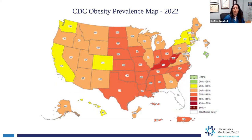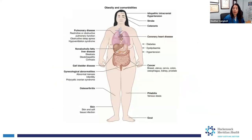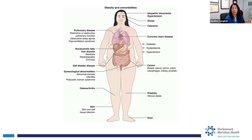So why do we worry about obesity? We worry about obesity because of the comorbidities that it causes, and it affects essentially all parts of the body. As an obese patient, you're certainly at an increased risk of having strokes. Heart and lung disease — patients usually have high blood pressure, as well as heart disease, restrictive pulmonary disease, sleep apnea, diabetes, and fatty liver.